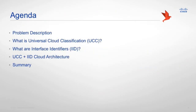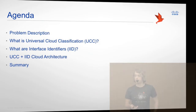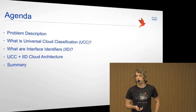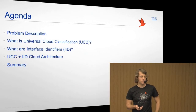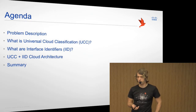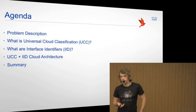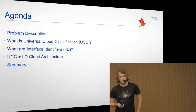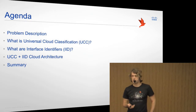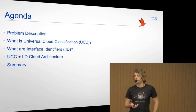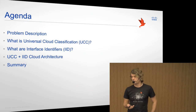I'll be discussing briefly what segmentation is and what problems we currently see with segmentation. I'll introduce my research which is Universal Cloud Classification. I'll go over the interface identifiers and then also provide an overview of the actual architecture with UCC and IID.